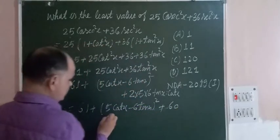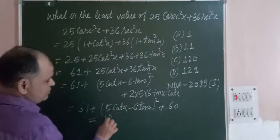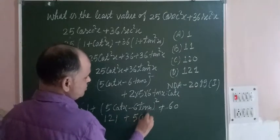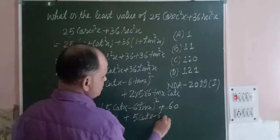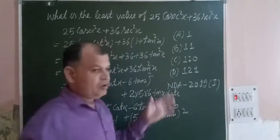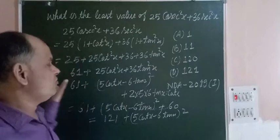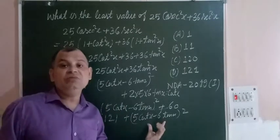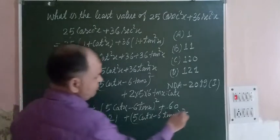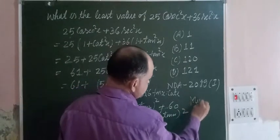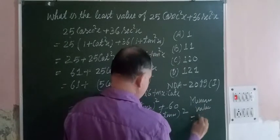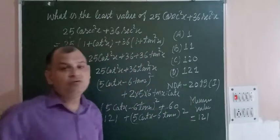For minimum value, this square term should be minimum, or this should be 0. If this square term is 0, then the minimum value or least value will be 121.